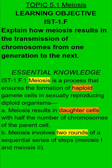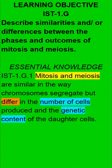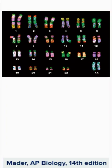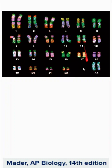Meiosis involves two rounds of division to create haploid daughter cells. Mitosis and meiosis are different in the number of cells produced and the genetic content of those daughter cells. Looking at a human karyotype, we have 22 autosomes and two sex chromosomes — 23 total pairs, so 46 total chromosomes. We call this diploid.